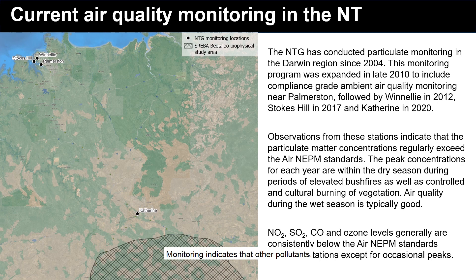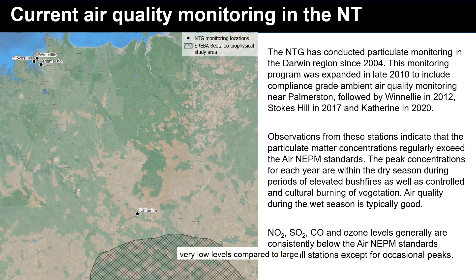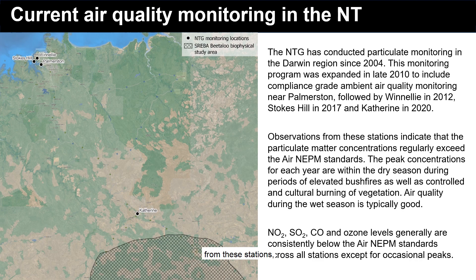Monitoring indicates that other pollutants such as nitrogen dioxide, sulfur dioxide and carbon monoxide all occur at very low levels compared to large cities in other parts of Australia, while ozone occurs at moderate levels, typically due to natural processes. Summaries of observations from these stations, including assessment against the NEPM standards, are provided in annual reports prepared by the Northern Territory EPA.